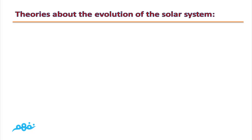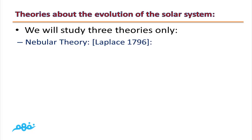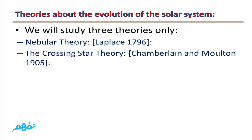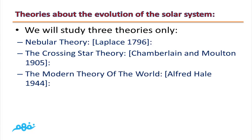Theories about the evolution of the solar system. We will study three theories only. The first one is called Nebular Theory, prepared by Laplace in 1796. The second theory is the Crossing Star Theory, prepared by Chamberlain and Moulton in 1905. The third theory is the Modern Theory, presented by Alfred Hoyle in 1944.